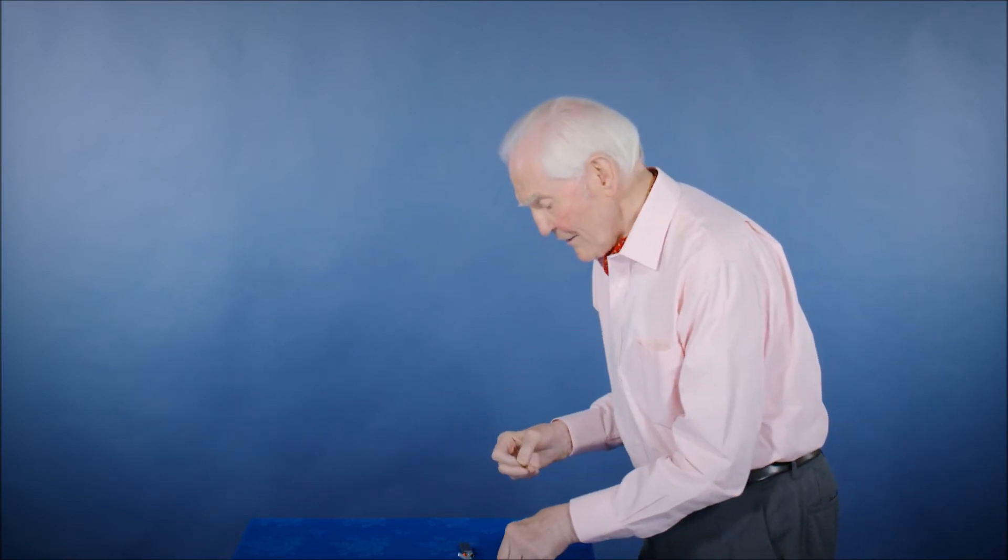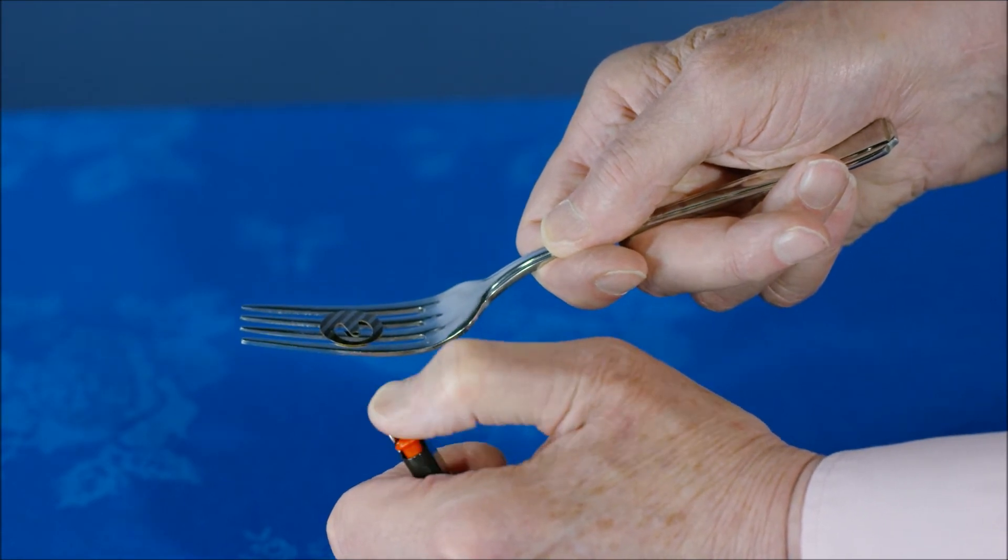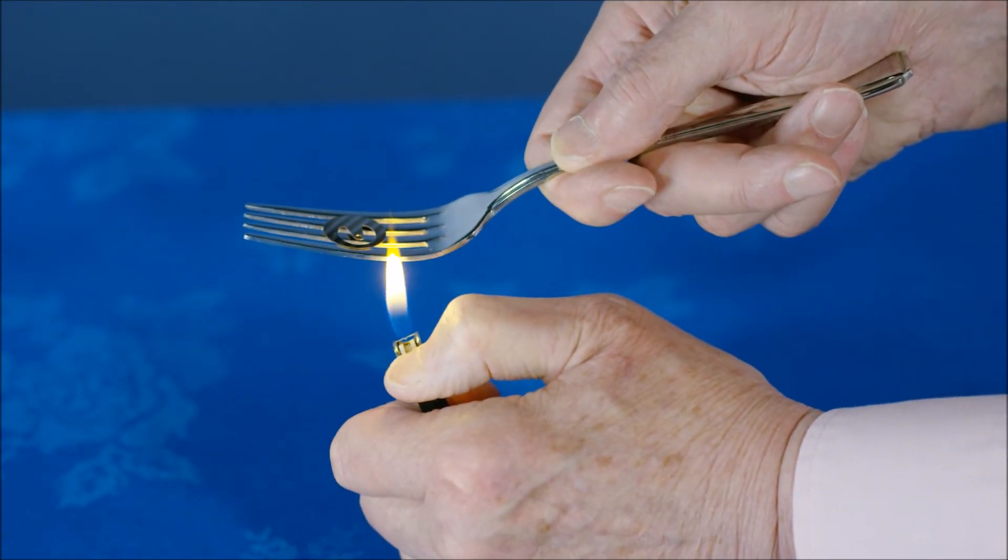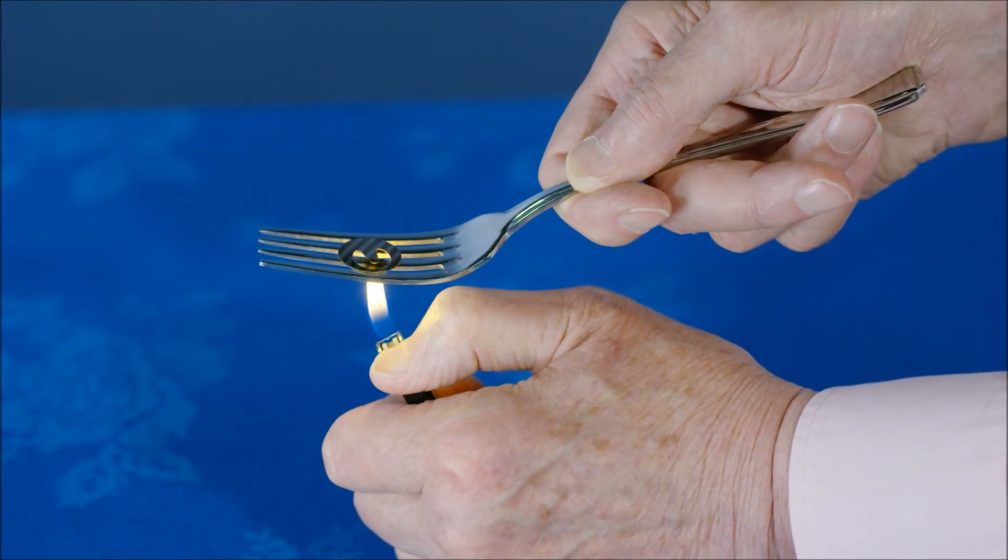So shall I show you it working? The easiest way to do that is to have a fork. Please don't use your grandmother's best silver. Put the bimetal on it, and then with a lighter, just heat it up, and it'll jump up into the air.